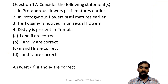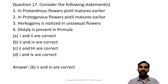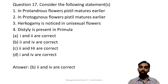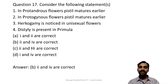Consider the following statements. In protandrous flowers, the androecium matures early - that means stamen matures first, not pistil. In protogynous flowers, the pistil matures earlier - this is correct, as 'proto' means first and gynecium means pistil matures first. Hercogamy is noticed in bisexual flowers, not unisexual flowers. Distylous condition is present in Primula. The second and fourth options are correct - answer option B.